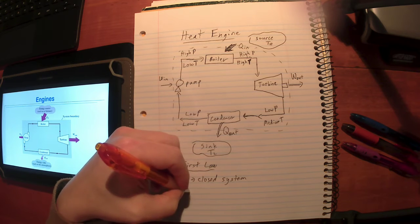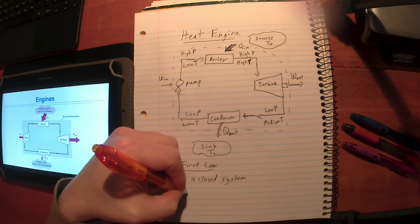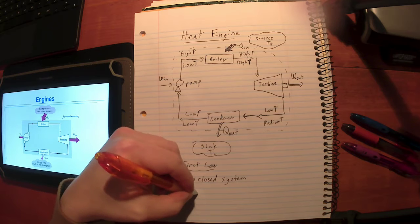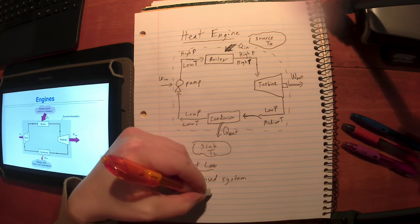So I draw up the first law for closed systems. Add the in, subtract the out. That's the way our textbook does it. They say Q in minus Q out.